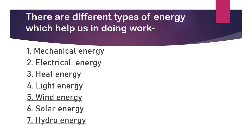Number two: electrical energy. Electrical energy comes from electric power plants. We use it to run electrical appliances at home, offices, and industries. Fan, television, oven, heater, and refrigerator are run by electrical energy. Number three: heat energy. We get heat energy from the sun, from burning coal, wood, petrol, and electrical heaters. Heat energy is very important for us to cook food, to warm our houses, and also for plant growth.